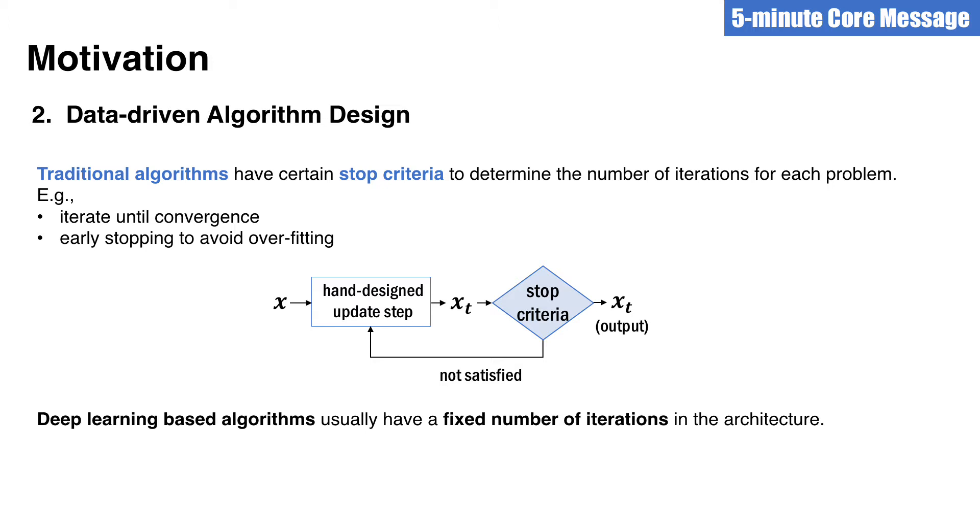The second motivation comes from data-driven algorithm design. Recently, there are many works that use deep learning to learn an algorithm, or use an algorithm layer in a deep learning model. We noticed that for traditional iterative algorithms, there is usually some stop criteria that decides whether to stop and output the result. For example, this stop criteria could be convergence, or one can use the validation set to select the result. However, in many current works that combine algorithms and deep learning, they unroll and truncate the algorithm to a fixed number of iterations, which may not be an optimal choice.